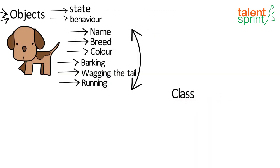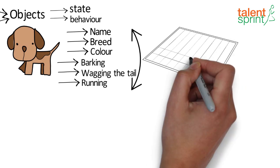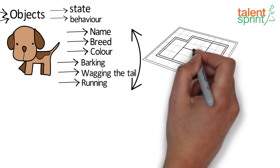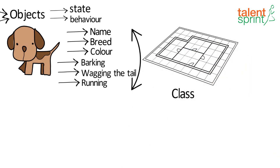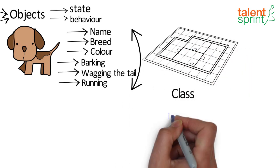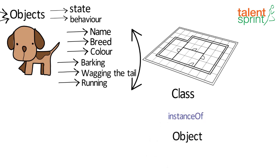A class is simply the blueprint that defines all the states and properties the object can have. So an object is simply the instance or result of a class.